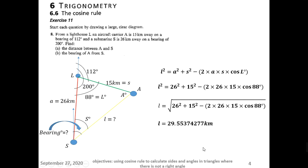This is correct to three significant figures. 2 is the first figure, 9 is the second, 5 is the third — you stop at the 5, look to the right, and the 5 brings the preceding digit up to 6. So the final answer, correct to three significant figures, is 29.6 kilometers.